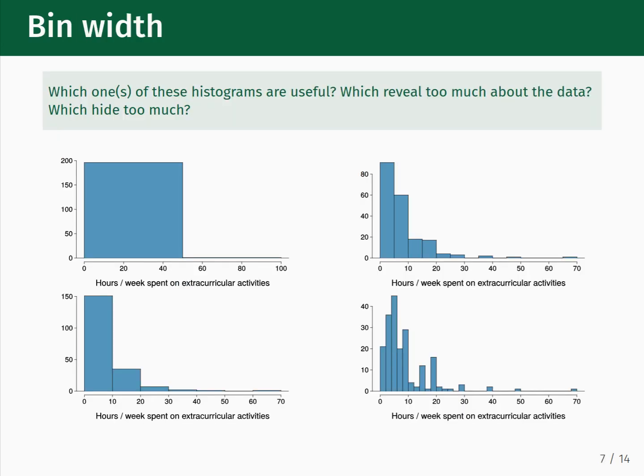As an example of the effect of the bin width, consider these four example bin widths. Which of these histograms are useful? Which reveal too much about the data? Which hide too much? The histogram in the upper left clearly hides too much about the data and removes most of the variation. The lower right histogram is the other extreme, where too much is shown and the noise in the data obscures the underlying trends.